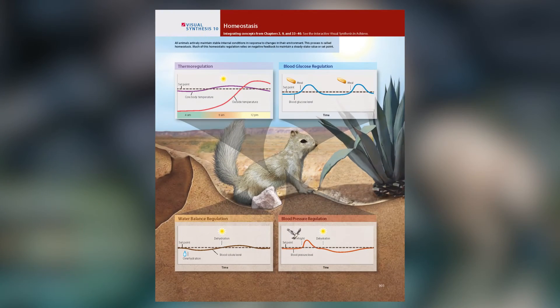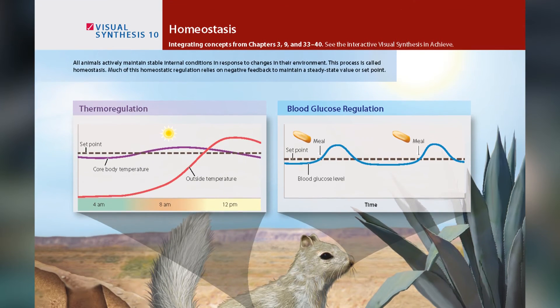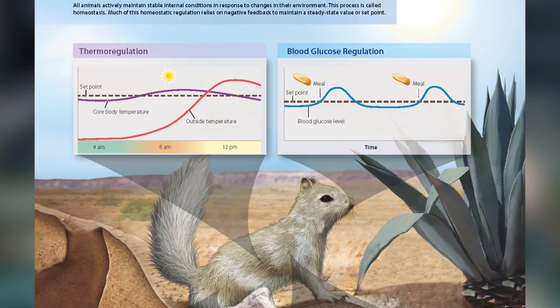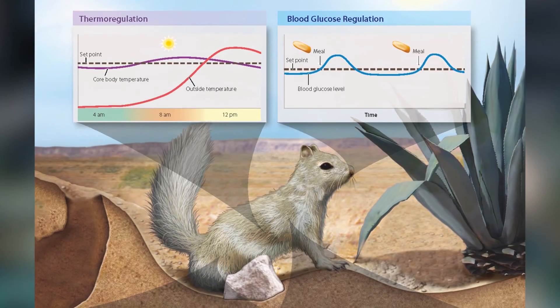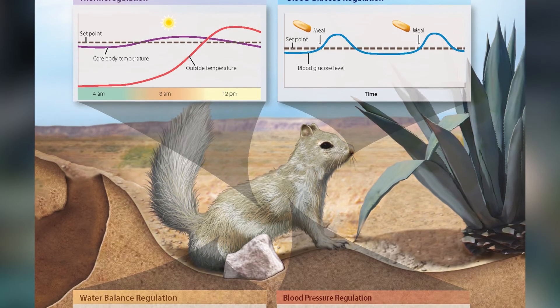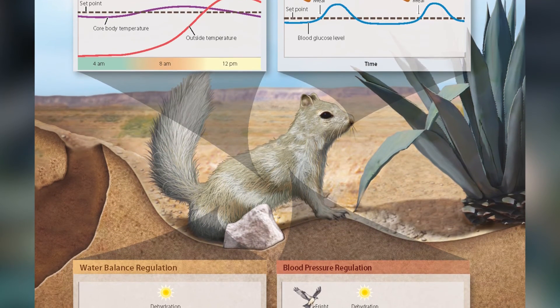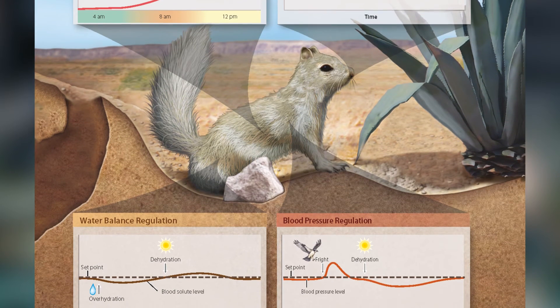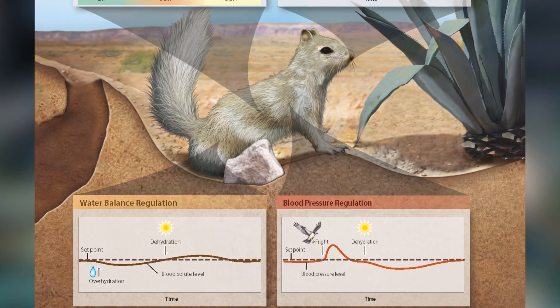The theme we use to unite those different systems is homeostasis — how do organisms maintain that internal state compatible with life? To emphasize that important concept, we have a new visual synthesis on homeostasis. Visual syntheses bring together information visually; in the book they're figures, and online they're interactives. We have 12 visual syntheses in the book, all focusing on big concepts like gene expression or the flow of matter and energy through ecosystems. In the case of the animal chapters, the homeostasis visual synthesis ties together the animal chapters and emphasizes that really important concept.